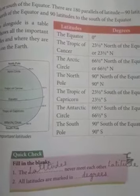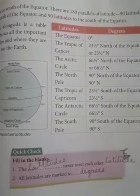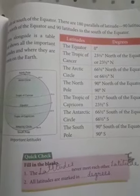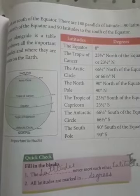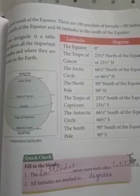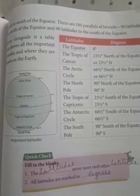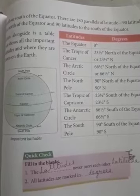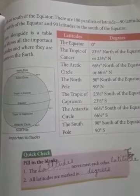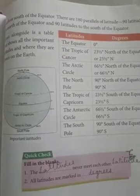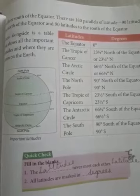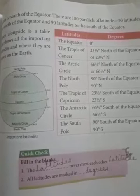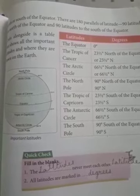We have done latitudes. In the center is the equator; above it is the tropic of cancer, the arctic circle, and the north pole; and below in the south is the tropic of capricorn, the antarctic circle, and the south pole. This much is clear. Now we will come to the next topic.